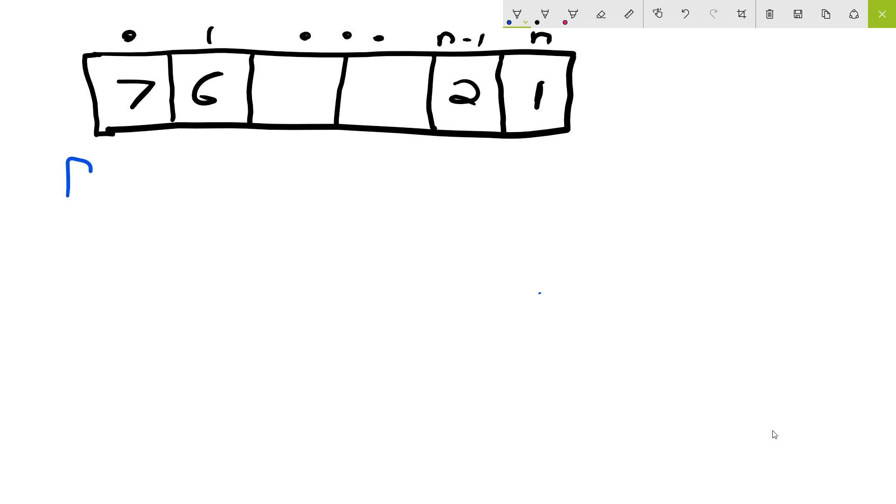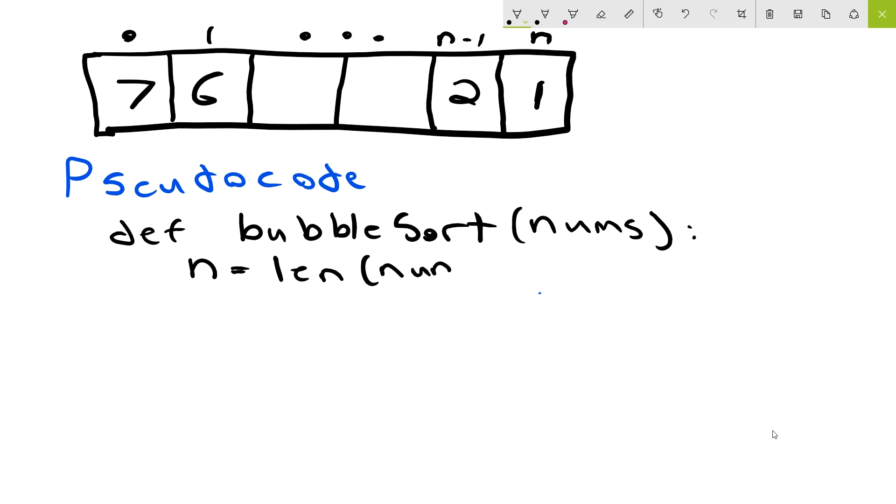We will finish this video by going through the pseudocode for bubble sort. So we'll begin by defining our function. So we'll do definition of bubble sort. And we'll have this function take in a list of numbers. And we'll just call that nums for short. Next, we're going to just define a variable called n, which is just going to be the length of the numbers. And we'll find this useful when we're iterating through the array. Next, we will need a for loop, which iterates, that represents the number of iterations that we will need in the worst case scenario. So we'll do range n.